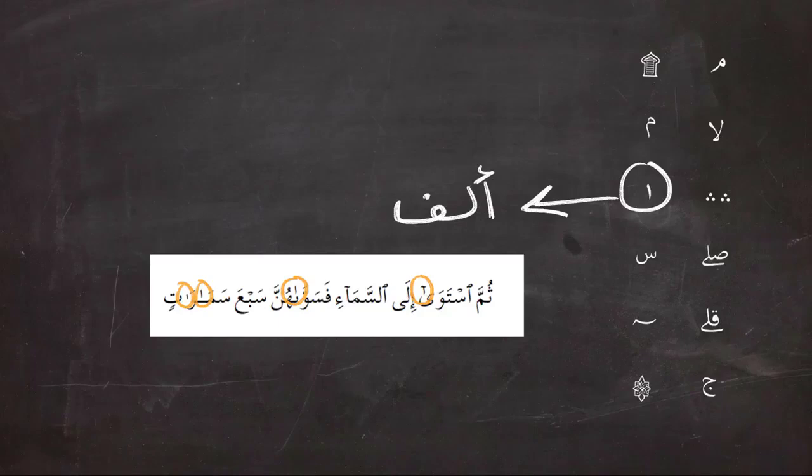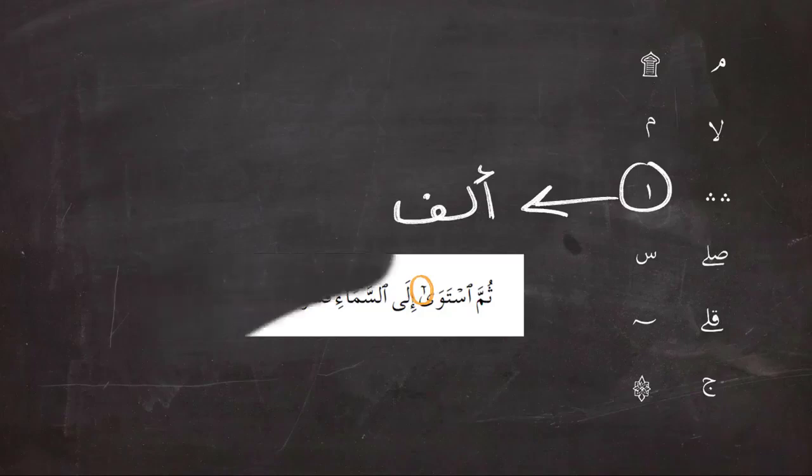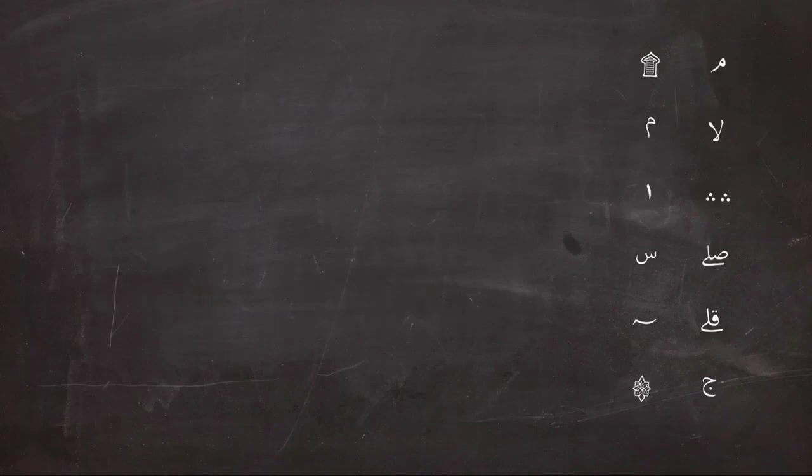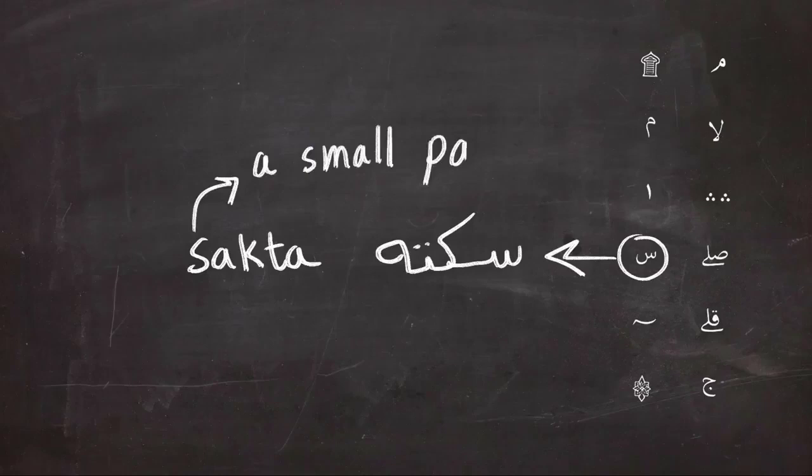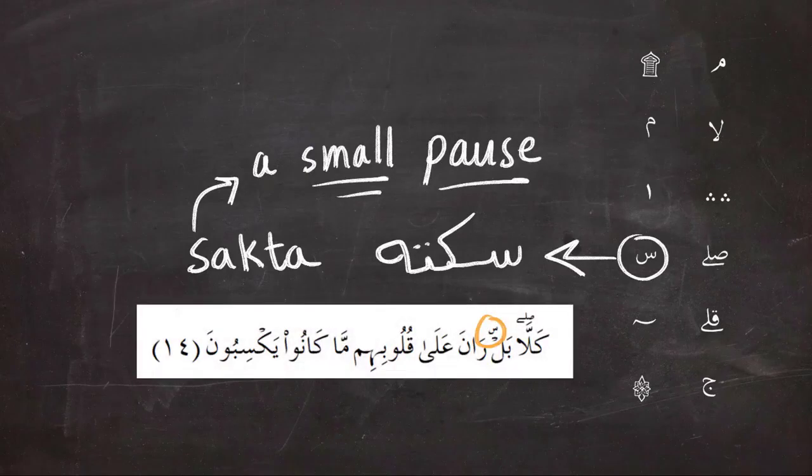Next, the small seen means a small or a very little pause. Doesn't mean that you're going to have to stop and take a breath. No, it means that you're going to stop very momentarily for like half a second and then continue reading. And this example shows what I'm talking about.